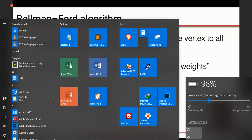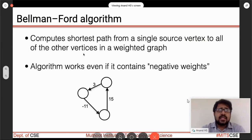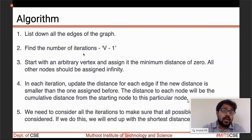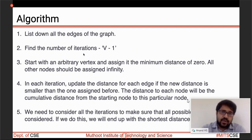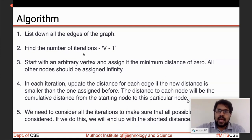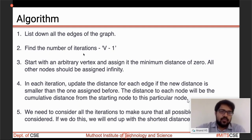The first step in Bellman-Ford algorithm is to list down all the edges. The second step is to find out how many iterations to process - if you have five vertices, iterations will be five minus one, that is four. The third step is to start with any source vertex, assign distance 0 to the source, and infinity to all other vertices.